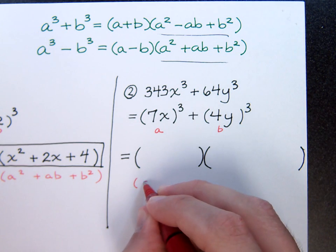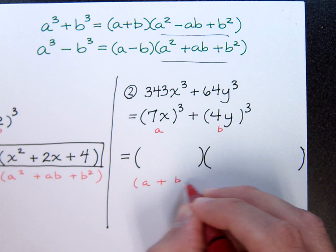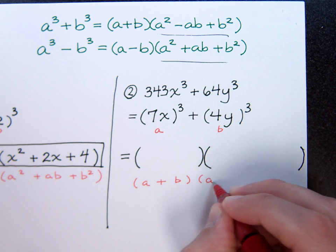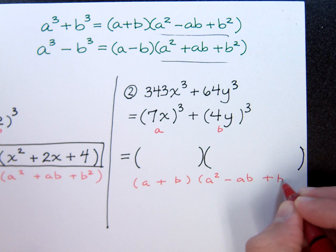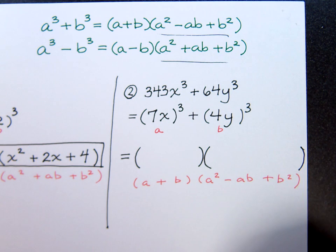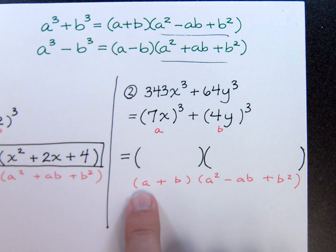Let's write this formula underneath it. So I know that this is supposed to factor as a plus b, and then a squared minus ab plus b squared.